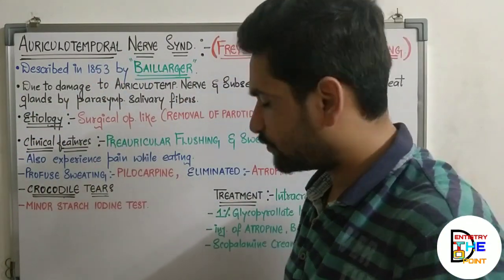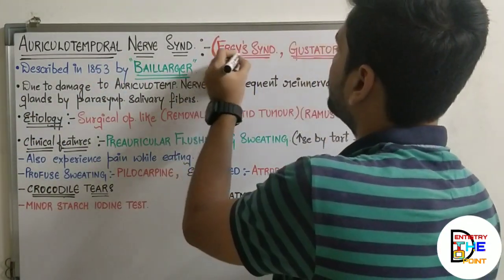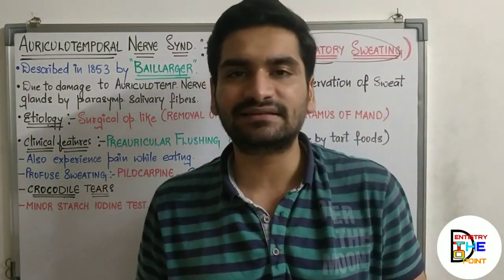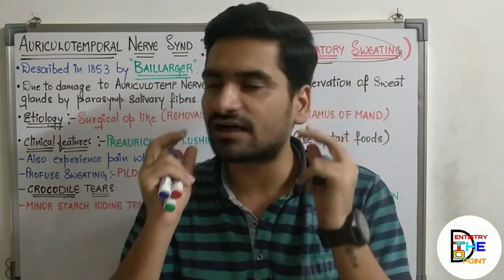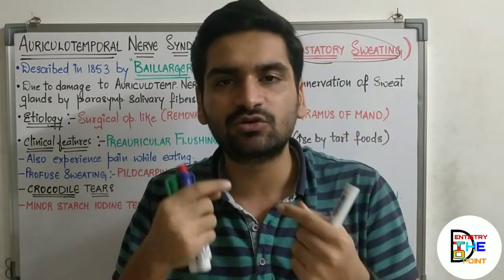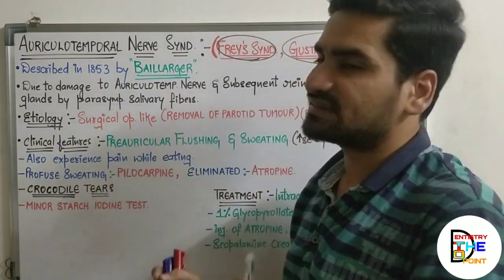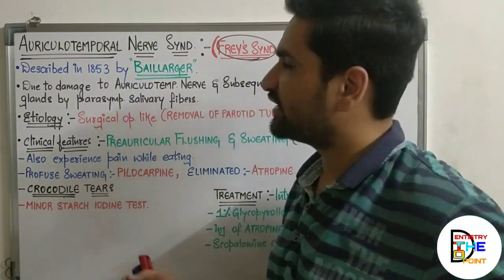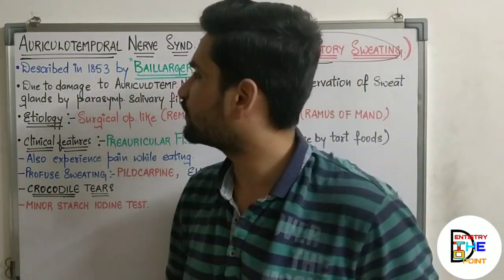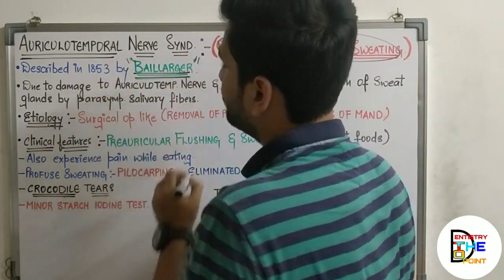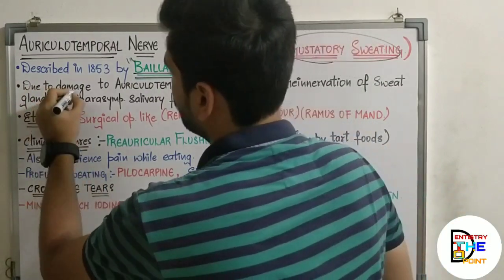Auriculotemporal Nerve Syndrome is also known as Frey's Syndrome, or you can also call it gustatory sweating. Gustatory sweating means there is sweating in the pre-auricular region — the area supplied by the auriculotemporal nerve — mainly while consuming any food. It was described by Bellarger in 1853, who was the first one to describe this condition.